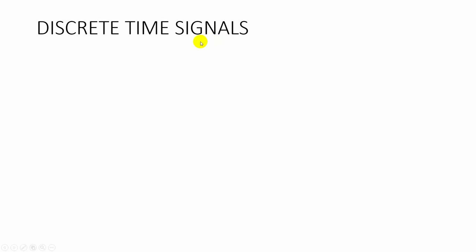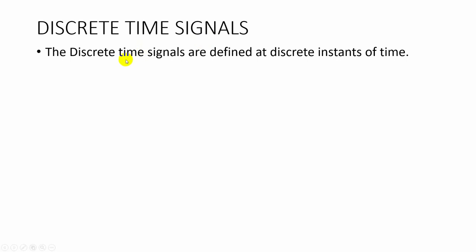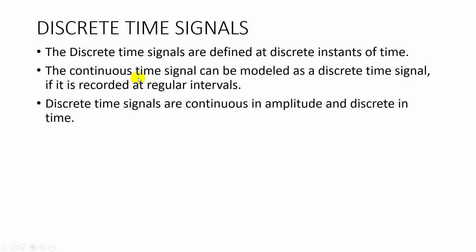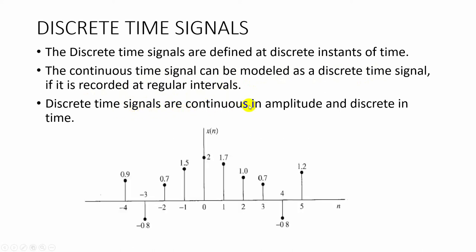Some examples of discrete time signals are speech signal and ECG signal. Discrete time signals are defined at discrete instances of time. We consider measurement of a person's body temperature per hour as a discrete time signal. Every continuous time signal can be modeled as a discrete time signal if it is recorded at discrete instances of time. Discrete time signals are continuous in amplitude and discrete in time.